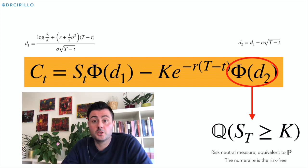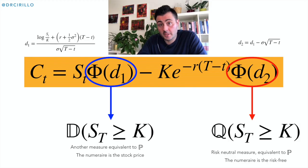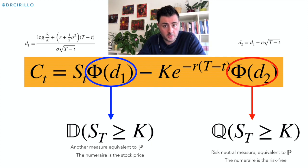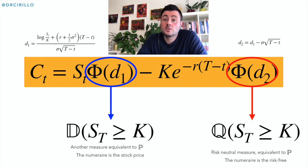So Phi(D2) is the probability Q of the event S_T being greater than or equal to the strike price K. For what concerns Phi(D1)? Again, this is a probability, and it is the probability of the same event — being in the money at maturity, so the probability of S_T being greater than or equal to K — but the probability measure used to elicit this number is no longer Q, and it is not P either. It's a brand new measure that we call D, also sometimes known as the stock measure.